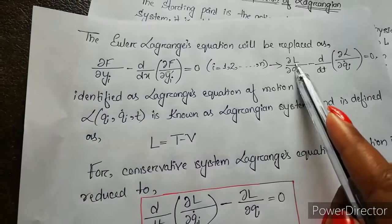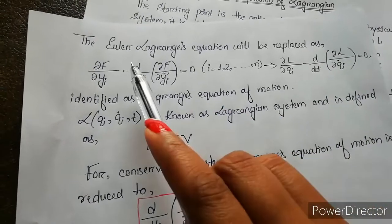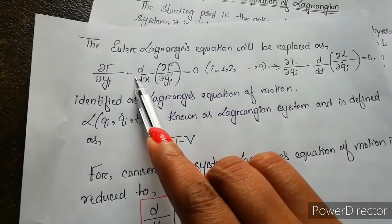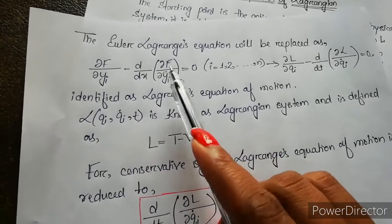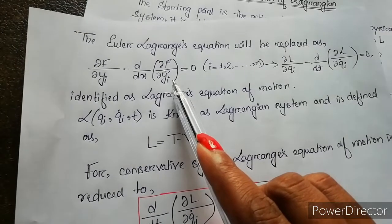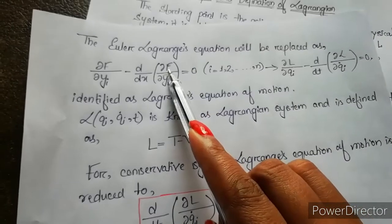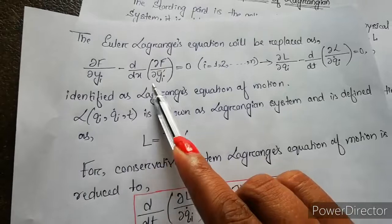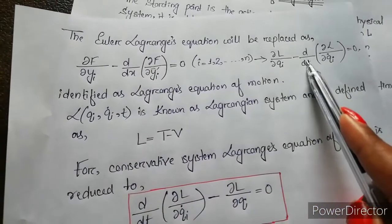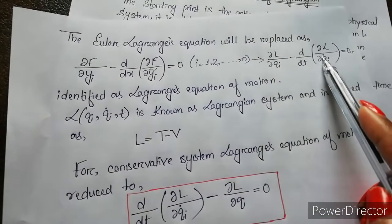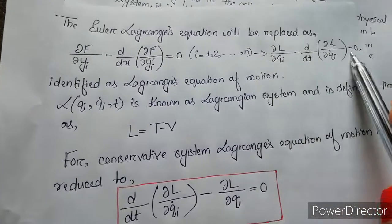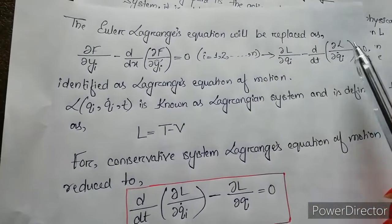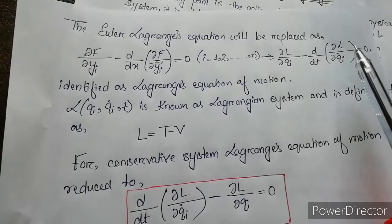Next, there's a minus symbol, and we have d by dx. Since x is replaced by t and yi prime is replaced by qi dot, and f is replaced by L, this particular term will be written as minus d by dt of del L by del qi dot equals zero. This equation is defined as the Lagrangian equation of motion.